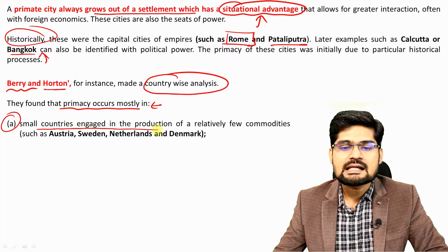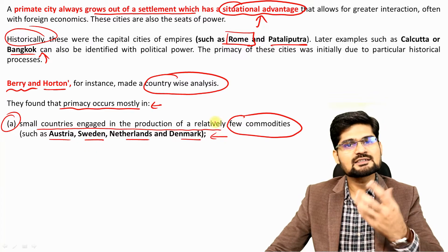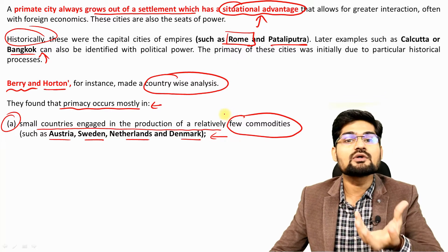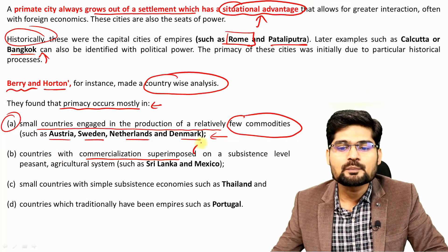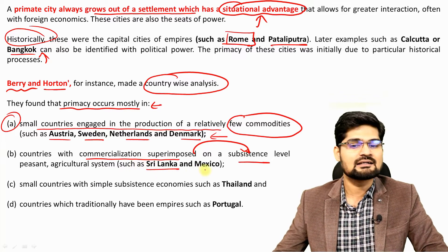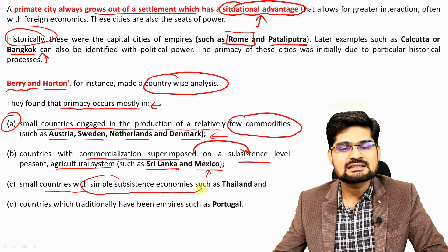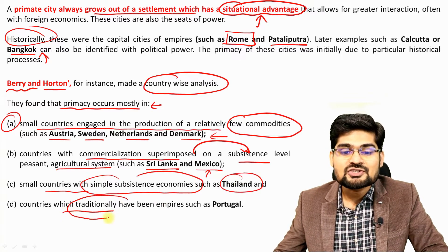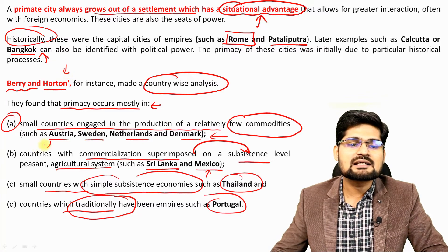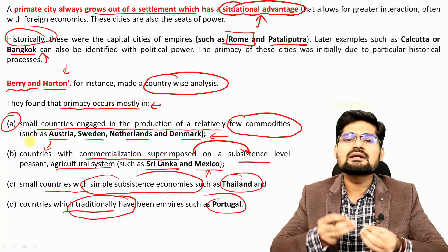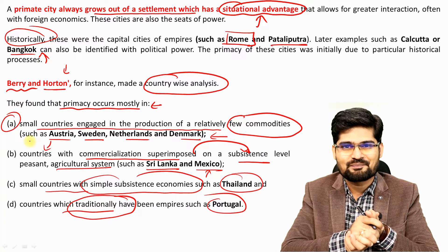Berry and Houghton found that primacy occurs in: first, small countries engaged in the production of few commodities — such as Austria, Sweden, Netherlands, and Denmark; second, countries with commercialization superimposed on subsistence level agriculture, like Sri Lanka and Mexico; third, smaller countries with simple subsistence economies like Thailand; and fourth, countries with traditional economies like Portugal. The common thread is that these countries are not large in aerial extent and are primarily dependent on agriculture.